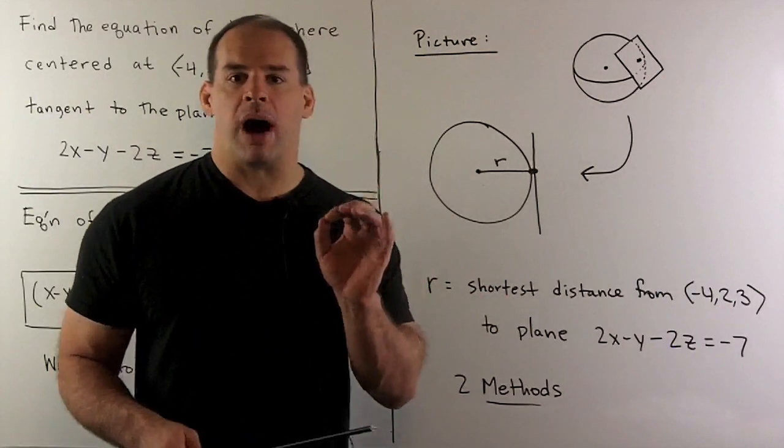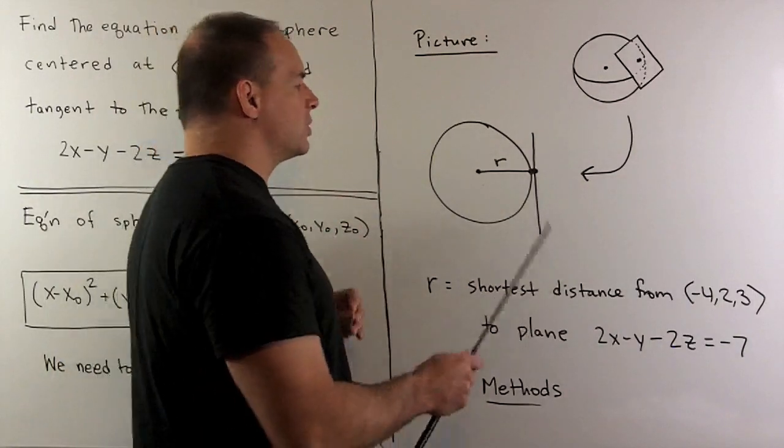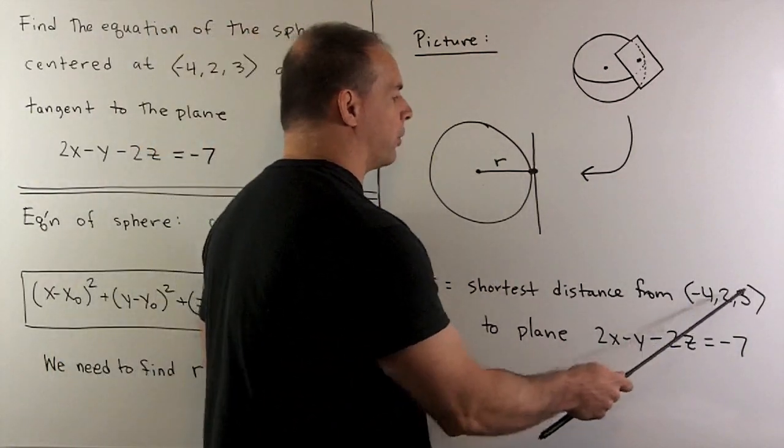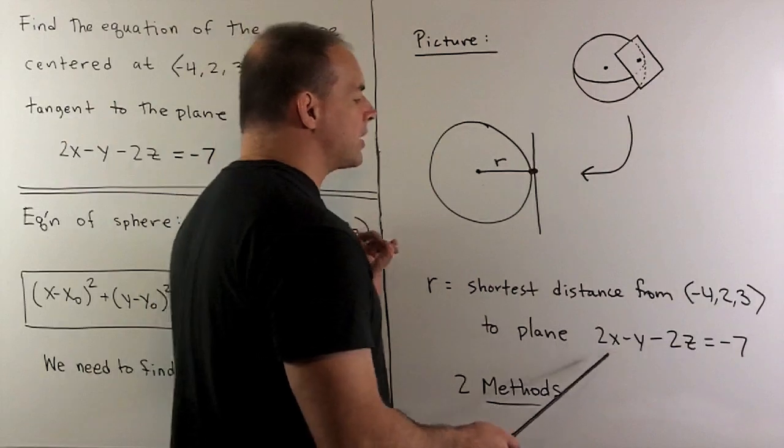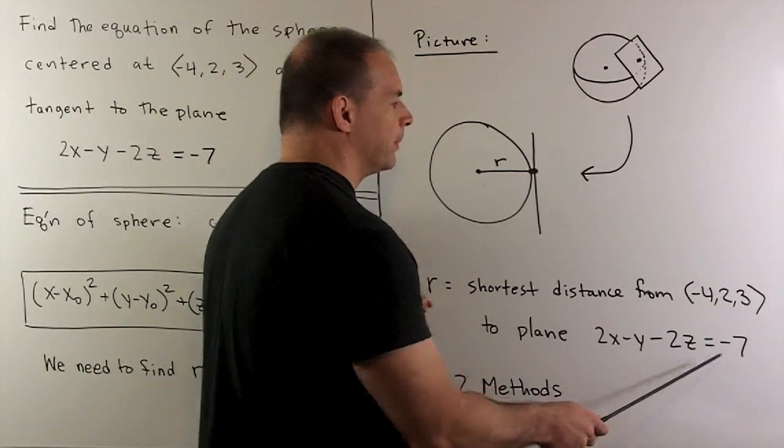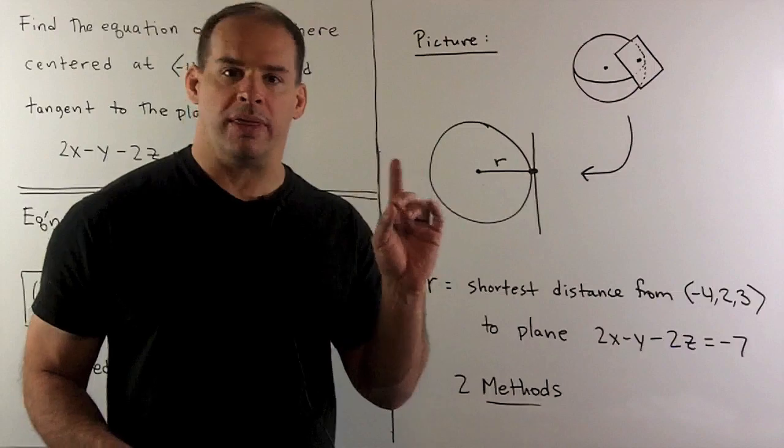We're really trying to solve the problem: find the shortest distance from the point (-4, 2, 3) to the plane 2x - y - 2z = -7. And we have two methods for doing that.